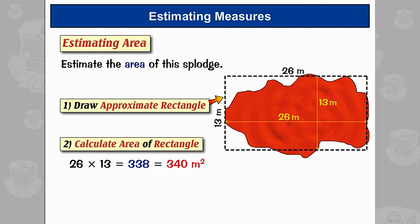Or, if I didn't have a calculator, I'd round the side measurements first to 30 metres and 10 metres. And that would give me 30 times 10, which is 300 metres squared. And remember, the units are squared because it's an area.